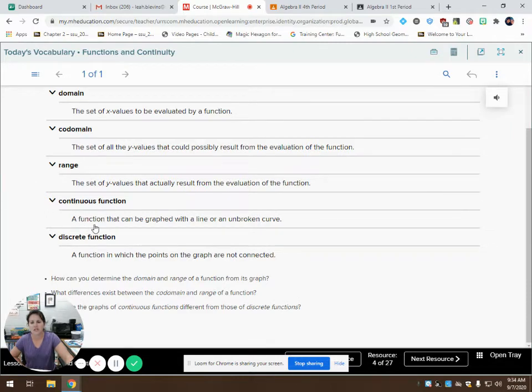So a continuous function is a function that can be graphed with a line or an unbroken curve. Think about what continuous means. It means it keeps on going. It doesn't stop. So if I was going to look at a graph, and I'm looking at a function, this is considered to be continuous because there's no break in the graph. But if I was to put a point here, let's just take a little chunk out of it, and then it starts over.